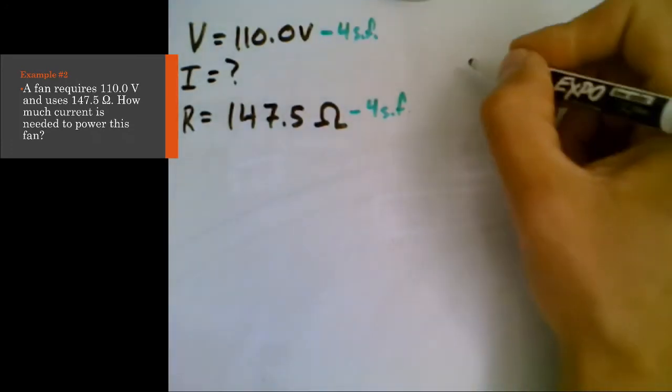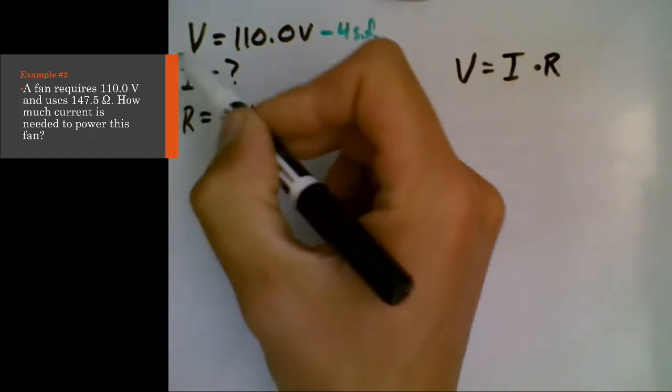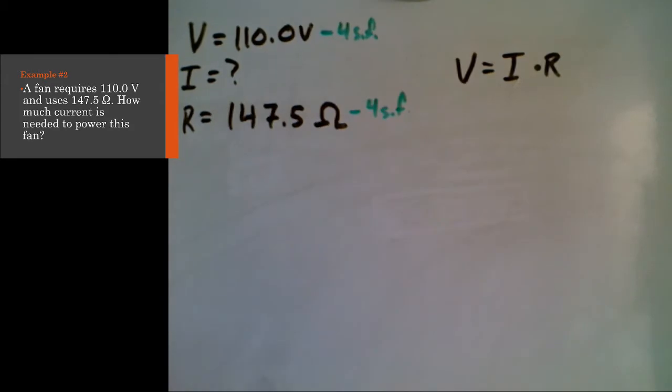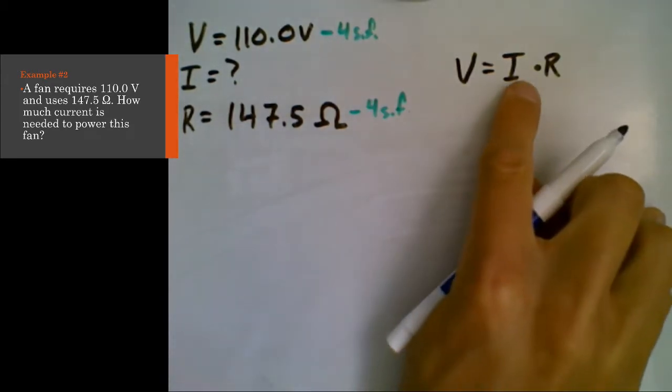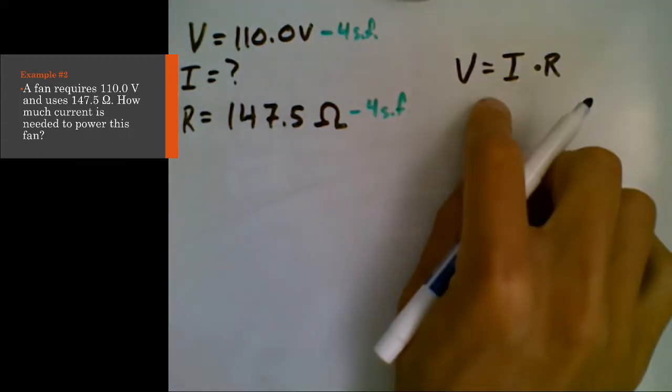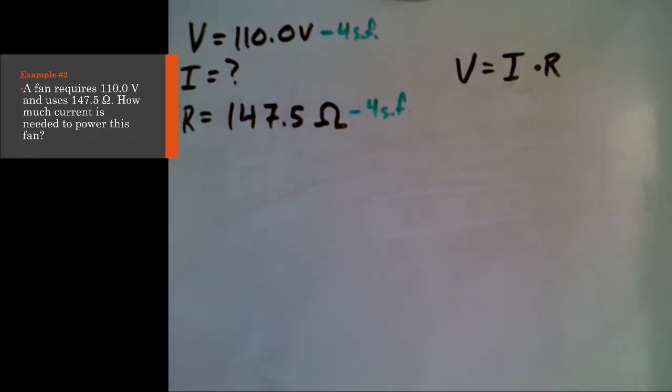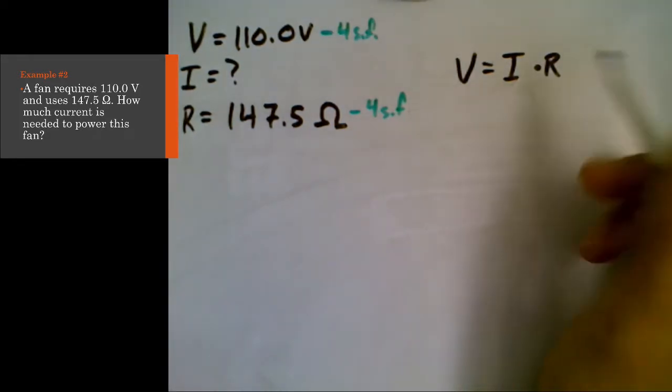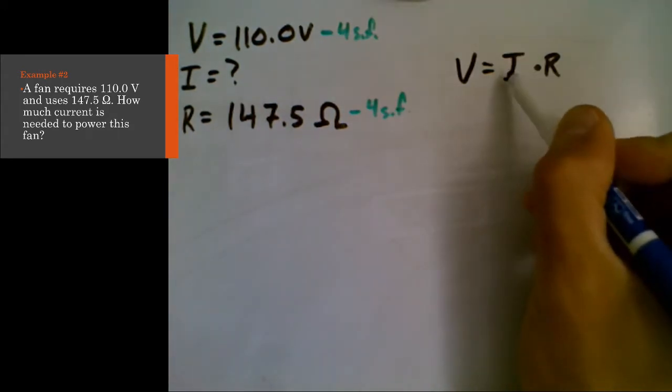So what that means is we're going to be using Ohm's law, V equals I times R, because those are the variables we've been given. But we need to isolate I. In physics, it tends to be done so that you actually solve for the value, you rearrange your equation first, plug your numbers in after so that you can do some canceling and things like that with more complex equations.